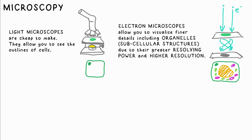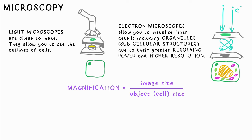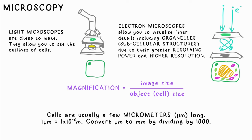We can calculate the actual size of a cell by knowing the magnification of the microscope. Magnification is equal to image size divided by object size. Rearranging this, we can measure the size of the image then divide by the magnification, and that gives us the actual cell size.